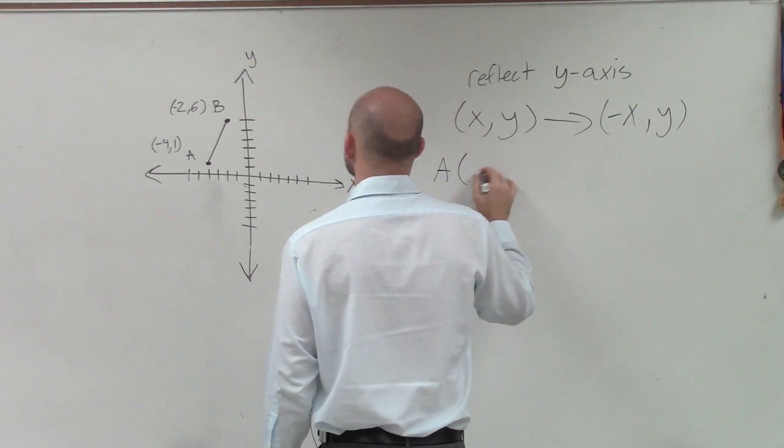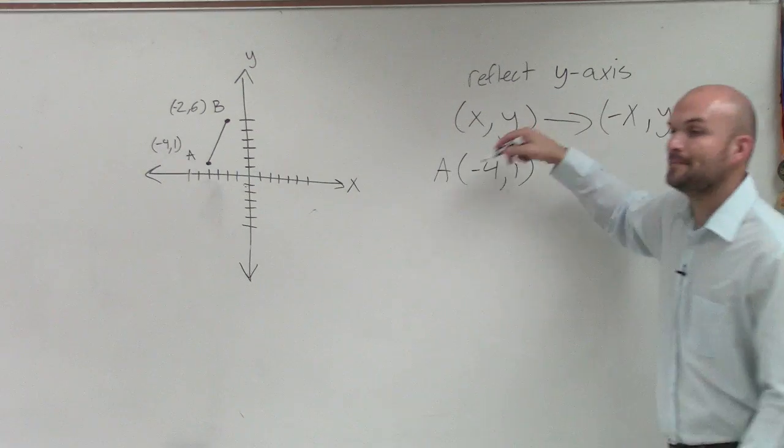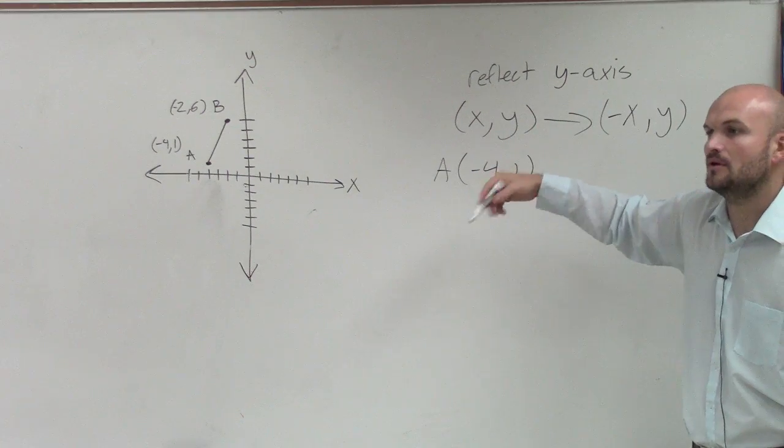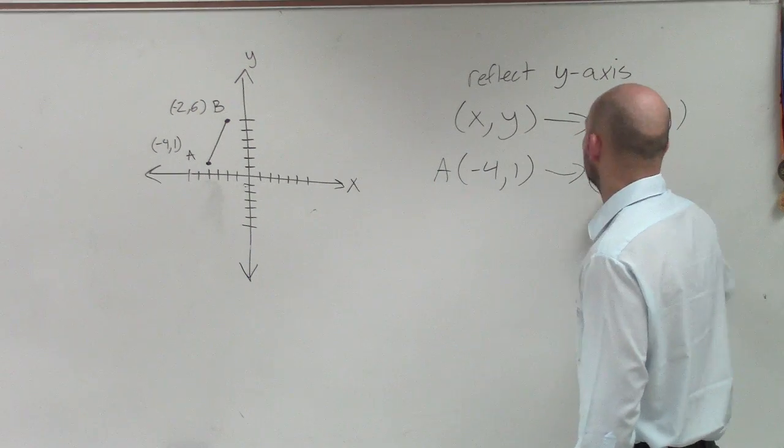So therefore, if my two coordinates, I have a, which is negative 4 comma 1. Well, what is the opposite of negative 4? Positive 4. And then the y-coordinate remains the same.